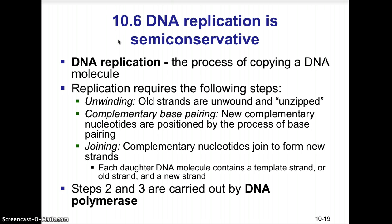DNA replication is the process of copying a DNA molecule, and it requires the following steps. First, the old parental DNA molecule must be unwound, and unwinding occurs using an enzyme called DNA helicase. DNA helicase unwinds the DNA molecule, exposing the nucleotides on the inside. What holds the two strands together are hydrogen bonds — three between cytosine and guanine, and two between adenine and thymine. Since hydrogen bonds are fairly weak, DNA helicase can attach and open up the molecule where replication is to begin.